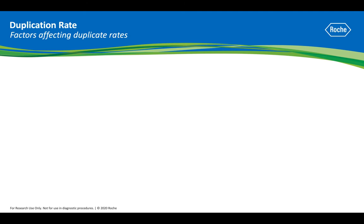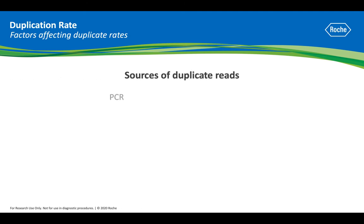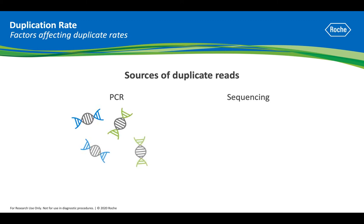Duplicate reads can arise from different sources. PCR is a common source of duplicate reads, known as PCR duplicates, where a single library is preferentially amplified resulting in excess of the same library, thereby lowering the overall complexity of that sample library.